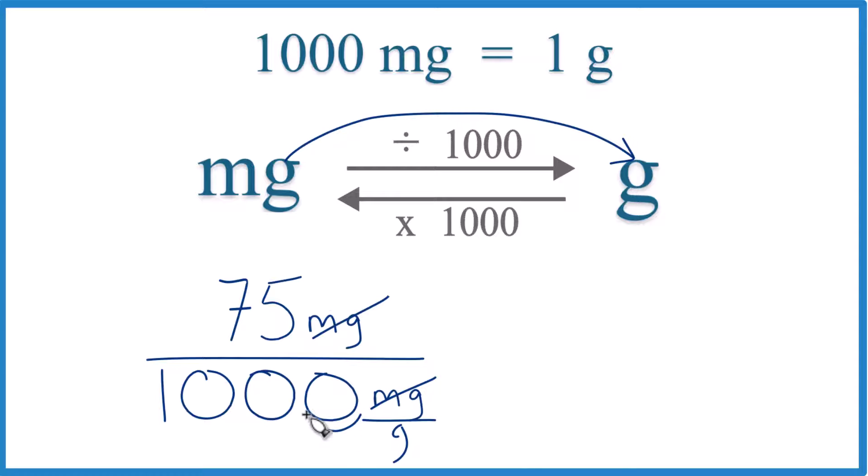So we can just move the decimal point 1, 2, 3. Now, this is just 1. We're only dividing by 1, but we have to do it up here too.